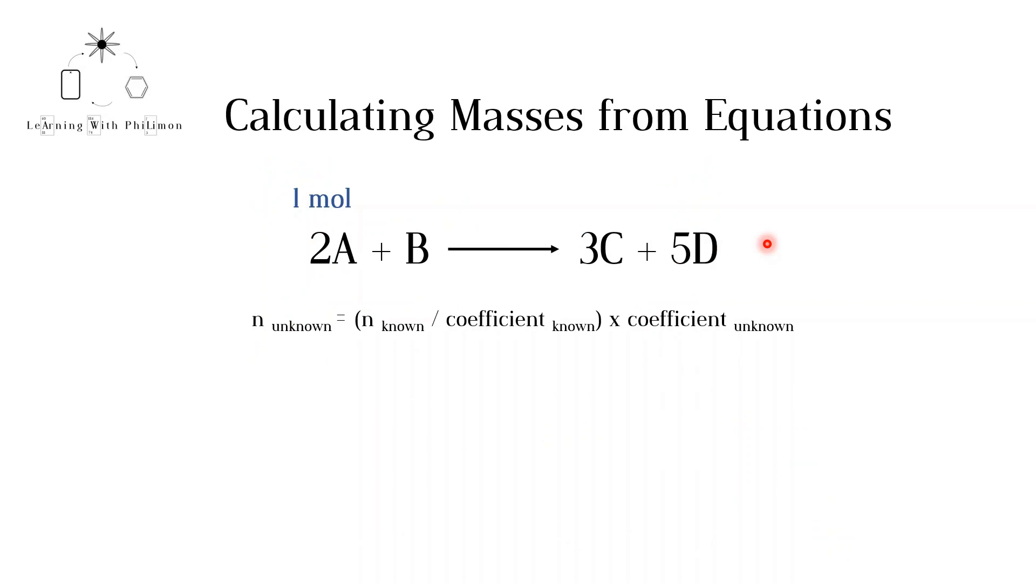Unfortunately, the ratio of coefficients is not always as simple as 1 to 2. In this made-up reaction, we have 2A plus B yields 3C plus 5D. If we have 1 mole of A, how can we figure out the moles of the rest of the reactants and products? When the coefficients are more complicated, you can use the following equation. The moles of the unknown species are equal to the moles of the known species divided by the coefficient of the known species and then multiplied by the coefficient of the unknown species.